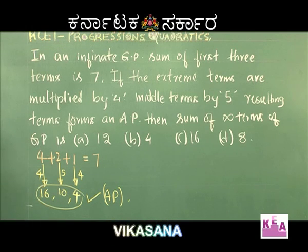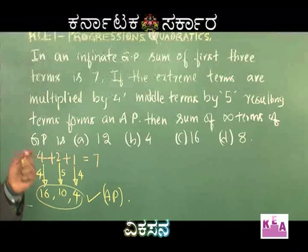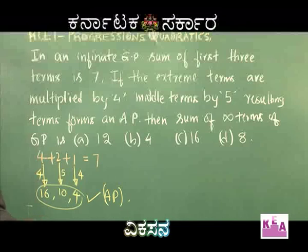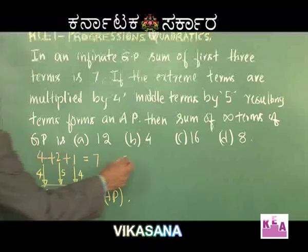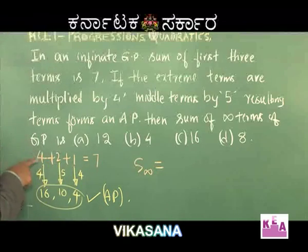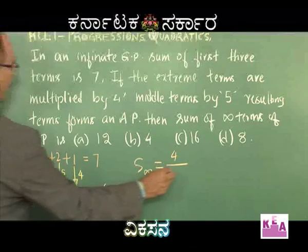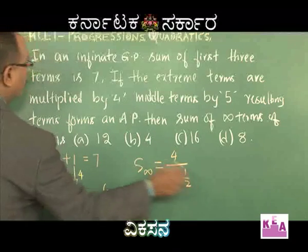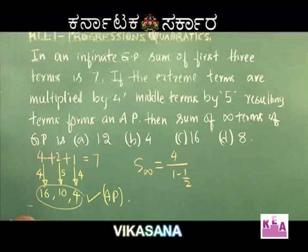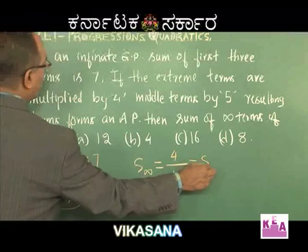Since our predictions are correct, we can directly compute S∞ = A/(1 - R). The first term A = 4, and R = 1/2, so S∞ = 4/(1 - 1/2) = 4/(1/2) = 8. Option D is correct. See how simple the problem is!